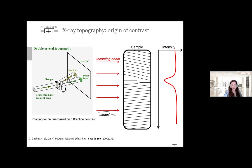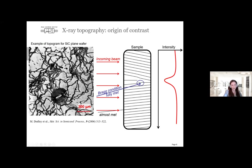In X-ray topography we send a monochromatic beam into the sample and record a topogram. The contrast is based on diffraction contrast: a sample with interatomic planes nearly at the Bragg condition transmits all signal, giving high intensity in the forward detector. If a defect brings a small fraction of the crystal exactly to Bragg condition, some light is diffracted and we see a dip of intensity in the forward detector. Bright regions show perfect structure; dark regions show defects—as in this silicon carbide wafer topogram.